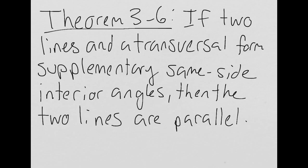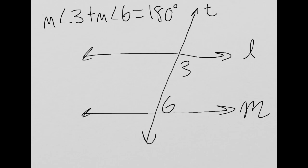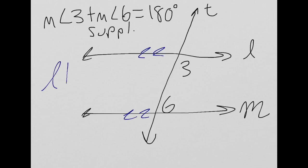Next up is theorem 3-6, the converse of the same side interior angles postulate. It says if two lines and a transversal form supplementary same side interior angles, then the two lines are parallel. The original postulate said that if two lines are parallel and cut by a transversal, then the same side interior angles will be supplementary. In this diagram, if the measure of angle 3 plus the measure of angle 6 equals 180 degrees, then by theorem 3-6, line L is parallel to line M.